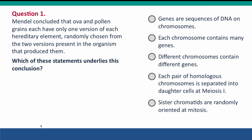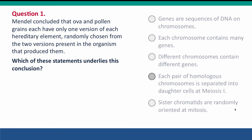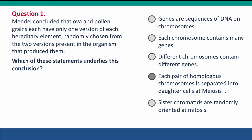Now here are some questions about what Mendel discovered. He concluded that ova and pollen each contain only one version of each hereditary element, and that these versions are randomly chosen from the two versions present in the parents. Which concept explains this? The answer is that each pair of homologous chromosomes — the two sets of elements present in the parent — are separated into daughter cells at meiosis 1, so that each daughter cell only gets one version of each hereditary element.